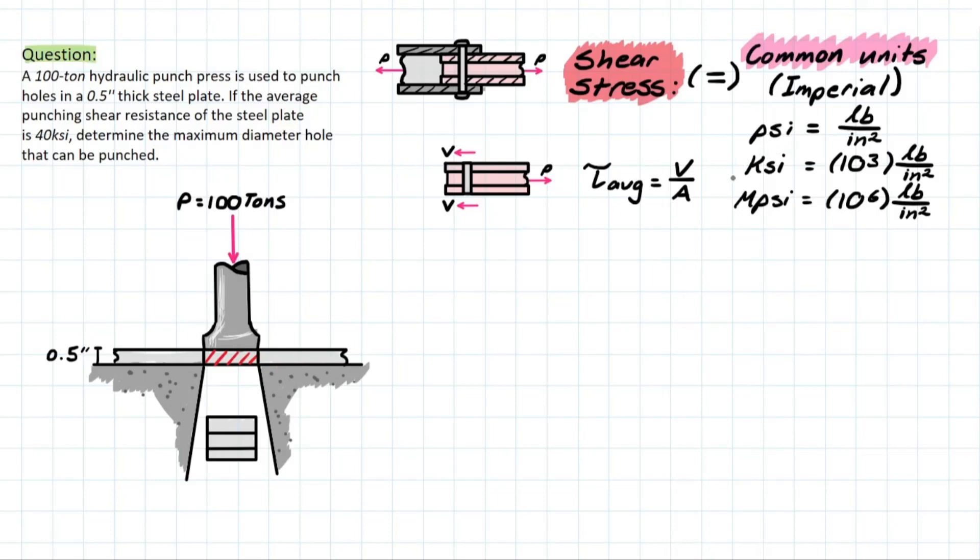So other conversions or other magnitudes of PSI would be KSI, which is kilopounds per square inch, and MPSI, which is megapounds per square inch. So similar to Pascals, what we dealt with before, if we had 10 to the 3 PSI, that would mean we would equal 1 KSI. And then if we had 10 to the 6 PSI, it would equal 1 MPSI.